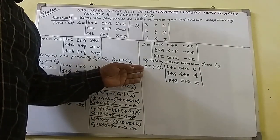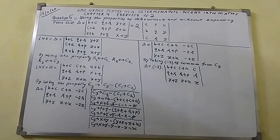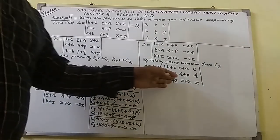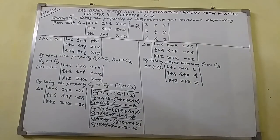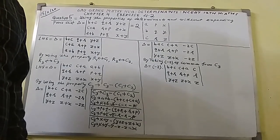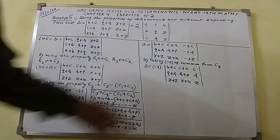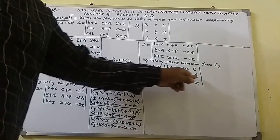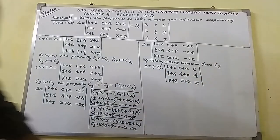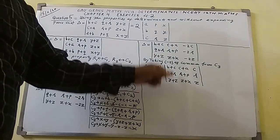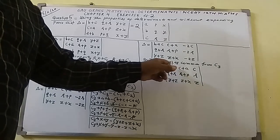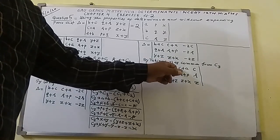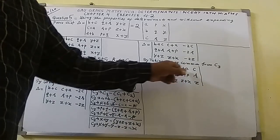In this determinant, C is present in C1 as plus C, in C2 as plus C, and in C3 as C. Similarly R and Z appear in both columns. So by using the property C1 goes to C1 minus C3, and C2 goes to C2 minus C3, changes occur only in C1 and C2 respectively. If C plus A minus C gives only A, and B plus C minus C gives only B.